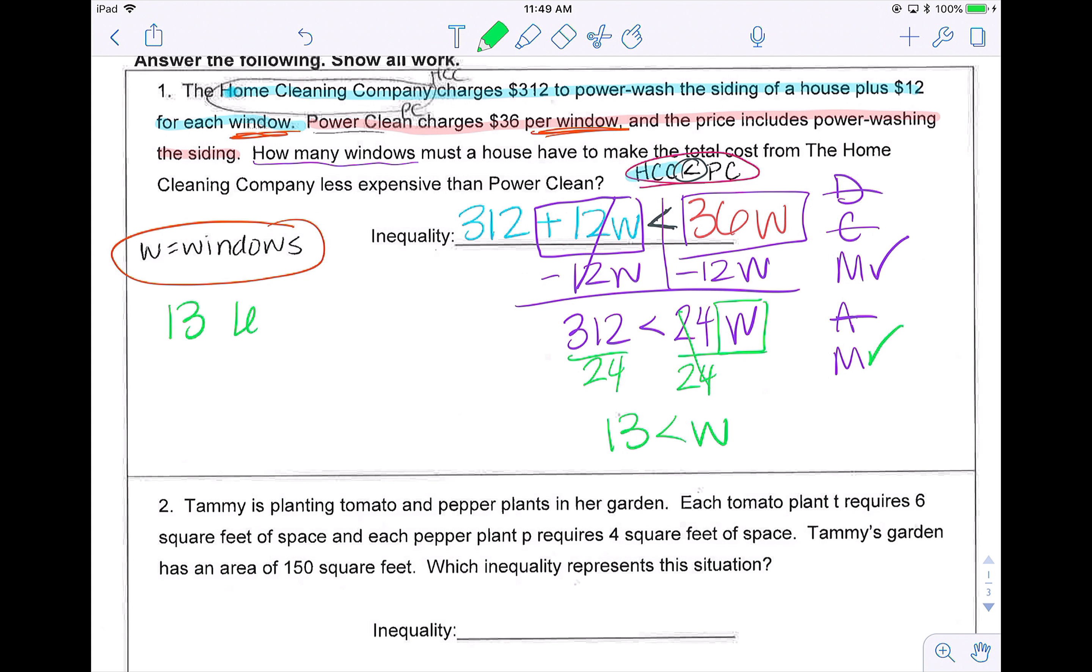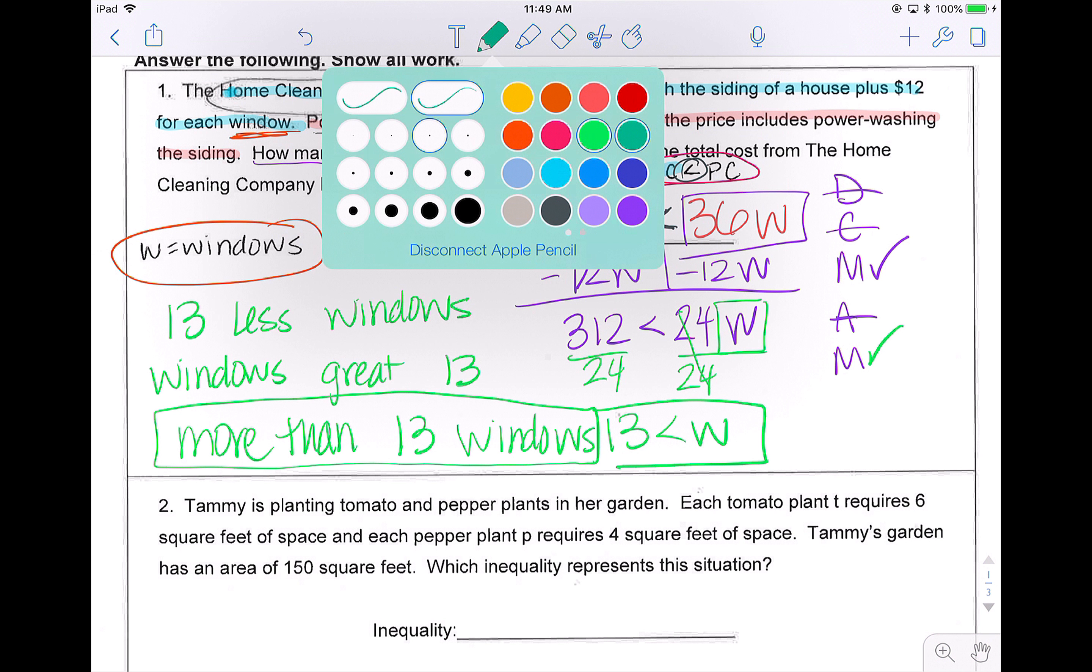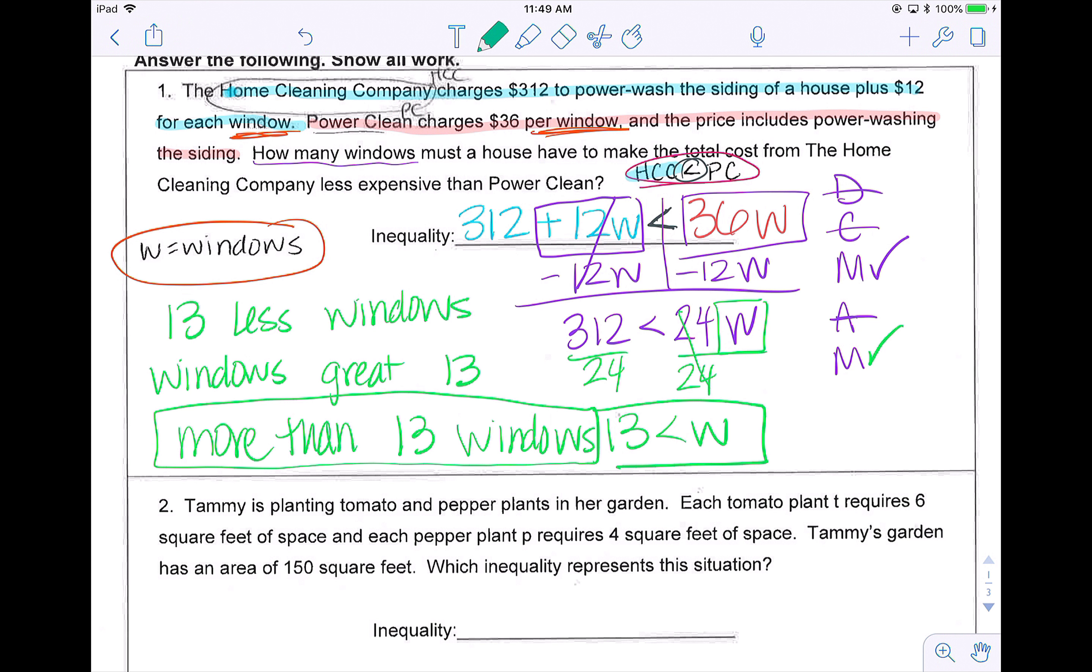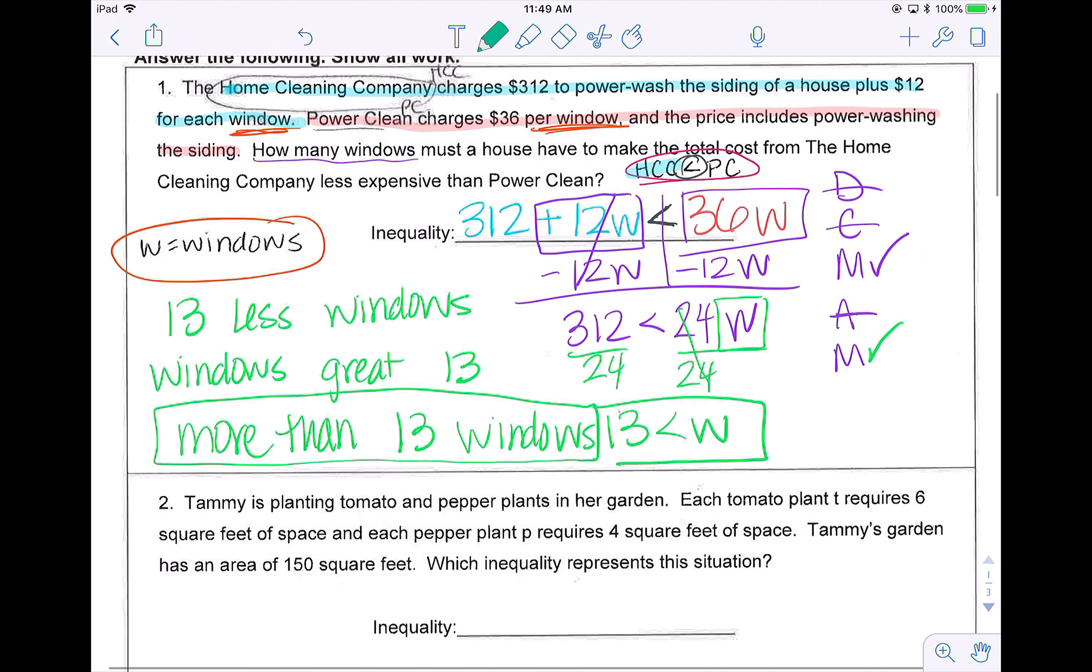13 less than windows. If I switch that, windows greater than 13. So more than 13 windows would be my answer. You also might be able to get away with just the inequality, but if your answer choices are listed in word form, then you would need to make sure that you know how to rearrange that.